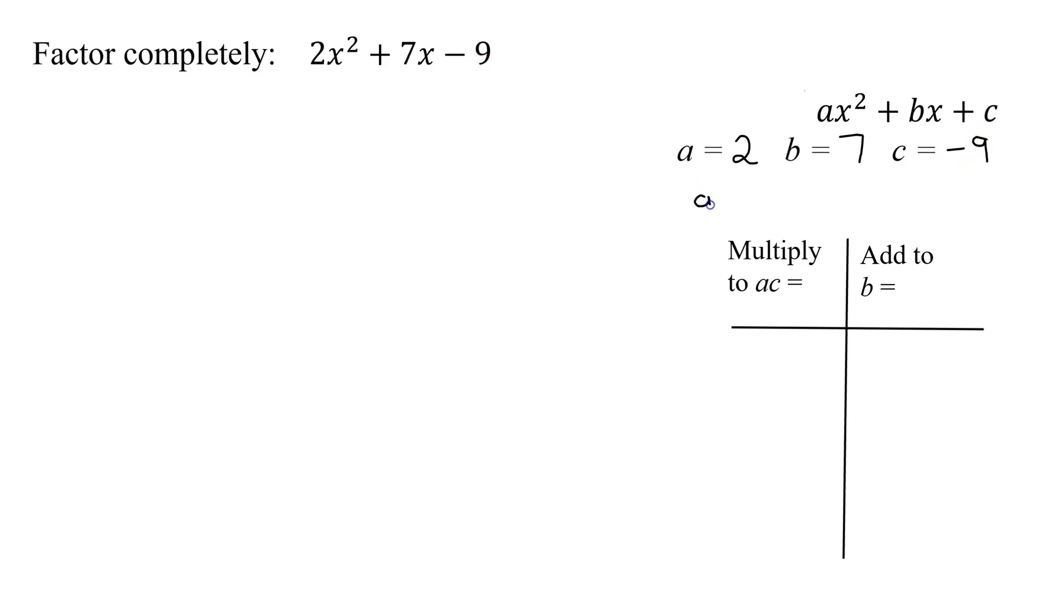So I'm going to multiply a times c, which is 2 times negative 9, which is negative 18. And I need 2 numbers that multiply to ac, which is negative 18, and add to b, that is 7.